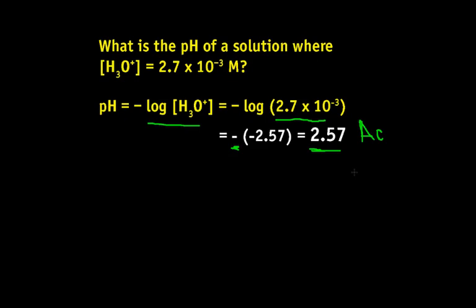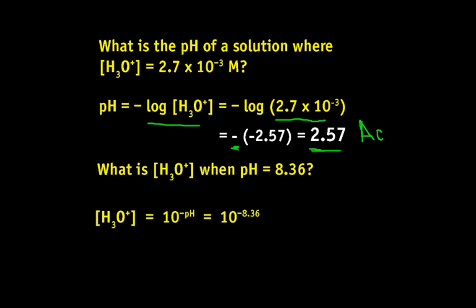Let's try another problem. What's the hydronium ion concentration when the pH is 8.36? Use the other equation: [H₃O⁺] = 10^-pH. Put -8.36 into the expression.